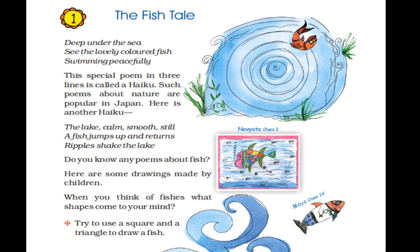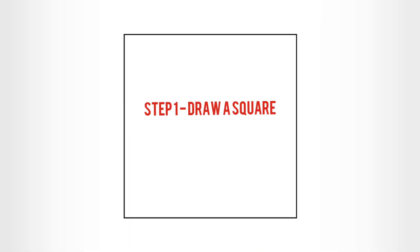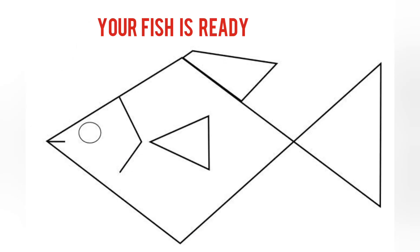Now moving towards shapes. Here, I would like to ask you to take a small piece of paper, pencil, and scale, and you will try to draw a square and a triangle and you will make a fish. You will use only two shapes to draw the fish. I have also tried here. Step one: I have drawn a square. Then step two: a triangle. And in the last step, the fish is drawn using a square and a triangle.